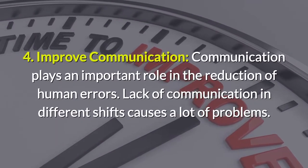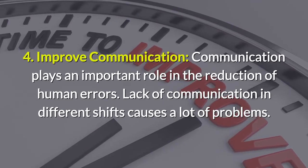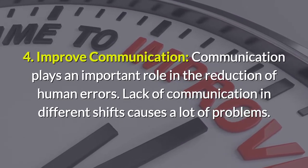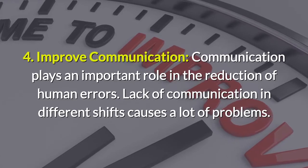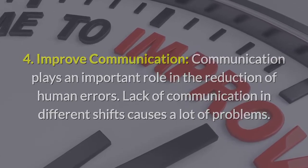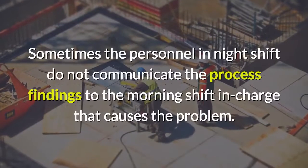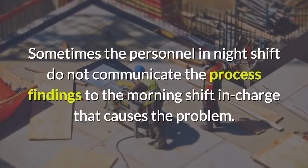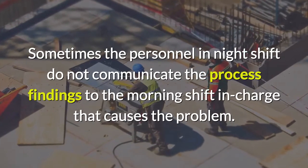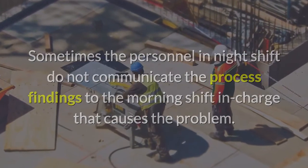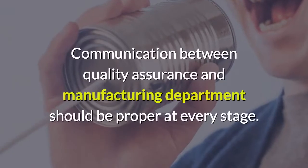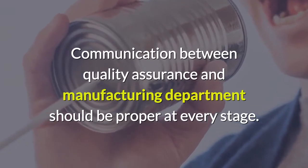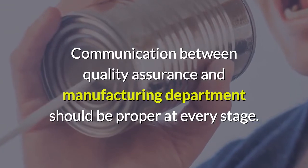4. Improve communication. Communication plays an important role in the reduction of human errors. Lack of communication in different shifts causes a lot of problems. Sometimes personnel in the night shift do not communicate the process findings to the morning shift in charge, which causes problems. Communication between the quality assurance and manufacturing department should be proper at every stage.